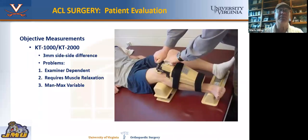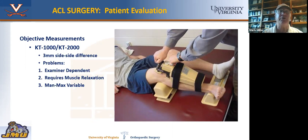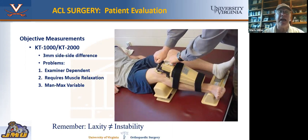You can objectively measure laxity with a KT-1000. The only difference between the KT-1000 and 2000 is the 2000 has a little printout. The problem with the KT is that it requires relaxation, and if you use the manual maximum — which is preferred — it's variable depending upon how hard you pull on it. Remember that laxity doesn't necessarily connote instability, because some people have baseline laxity.